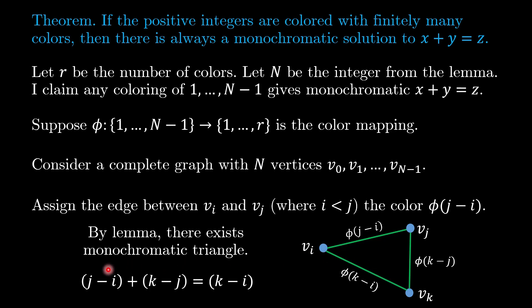But notice that j minus i plus k minus j is equal to k minus i. And these three integers we have just said are of the same color. So therefore, I have just proven that this coloring has given us a monochromatic solution to x plus y equals z.